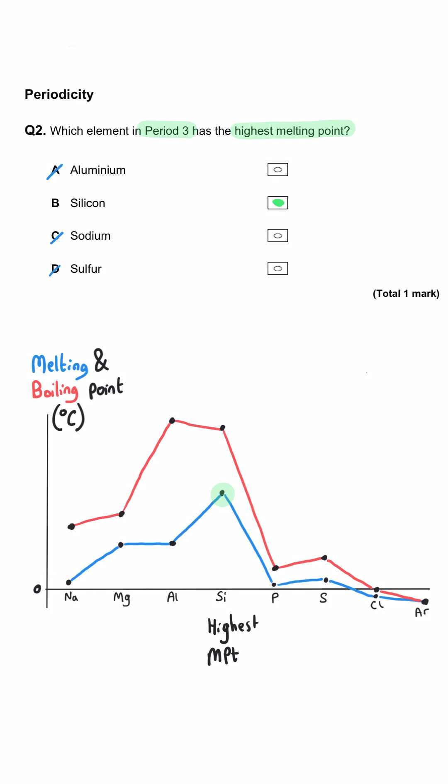The reason that B is the correct answer is that silicon has a giant covalent structure. That means there is a huge number of silicon atoms connected by strong covalent bonds, which require a lot of energy to break.